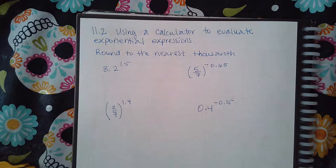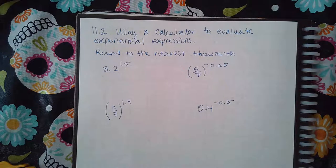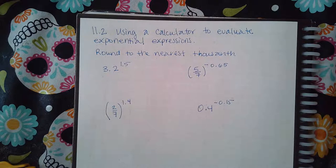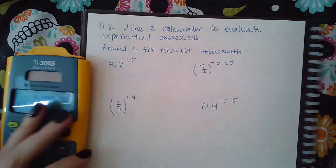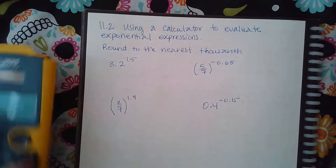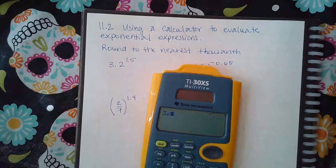Here we have using a calculator to evaluate exponential expressions. It says round to the nearest thousandth. So literally this one is just using the calculator as it says. You write 3.2 and then...